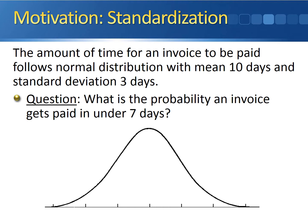Here's what we can do. The mean of the distribution is ten, so we're going to center our normal distribution directly at ten. We want the probability that this invoice gets paid in under seven days, so we'll plot seven along the curve. We don't necessarily know exactly where it's going to fall, but we'll just put seven down at the bottom.